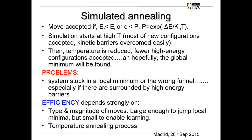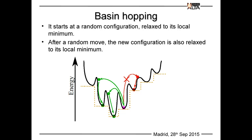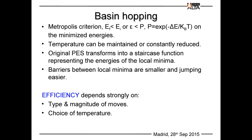Basin hopping is similar to simulated annealing but relaxes each structure to its local minimum first. A deformation is applied, the structure is relaxed, and the Metropolis criterion is applied on the local minima, giving a stepwise function. The barriers between these local minima are smaller, reducing noise in the energy surface. The temperature can be decreased or maintained. Efficiency depends on move type, magnitude, and temperature schedule.